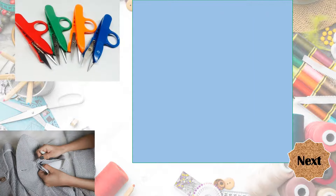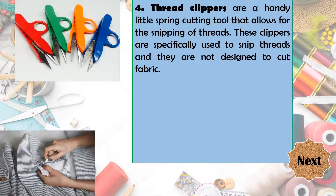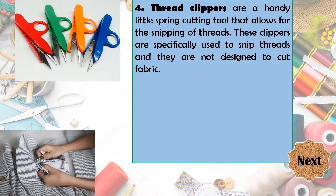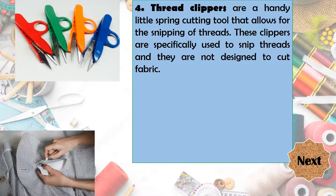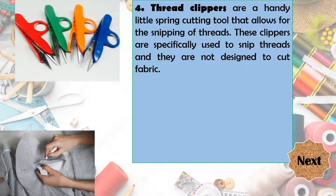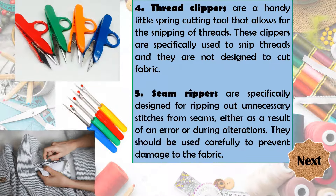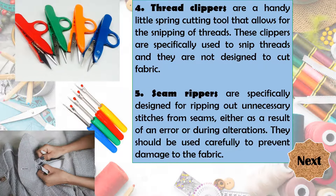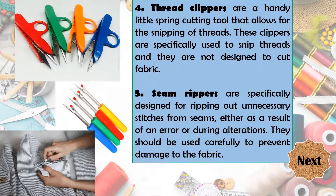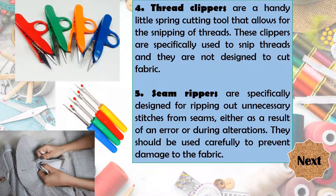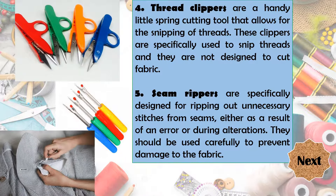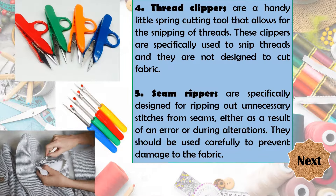Let's look at these cutting tools. These are what we call the thread clippers. They are a handy little spring cutting tool that allows for the snipping of threads. These clippers are specifically used to snip threads and are not designed to cut the fabric — they are only used to cut threads. Another cutting tool is the seam ripper. It is specifically designed for ripping out unnecessary stitches from seams, either as a result of an error or during alterations. They should be used carefully to prevent damage to the fabric.